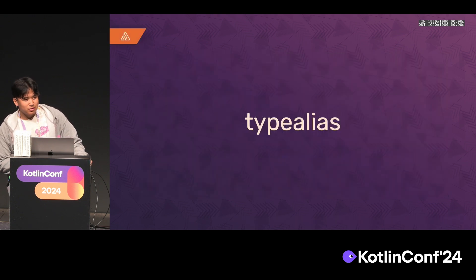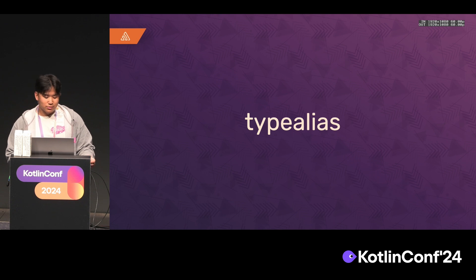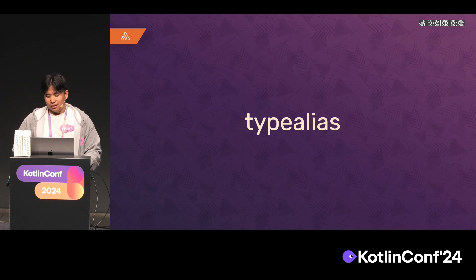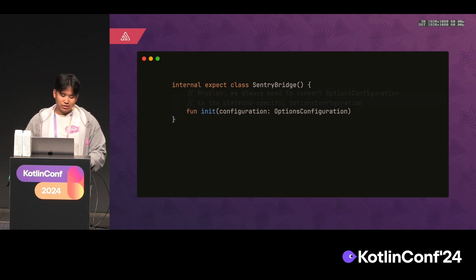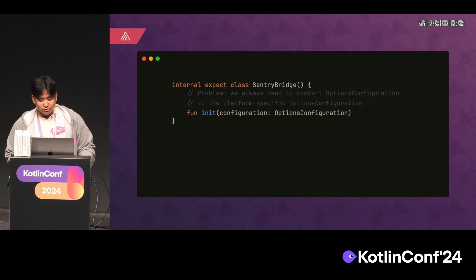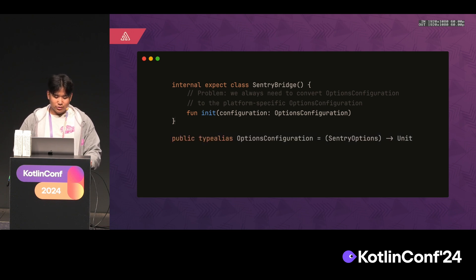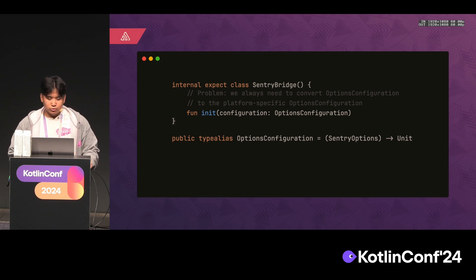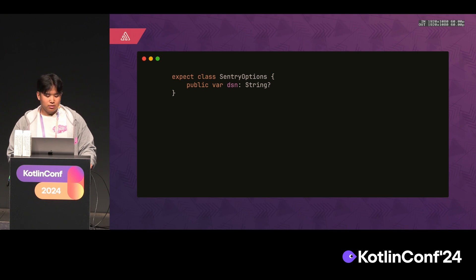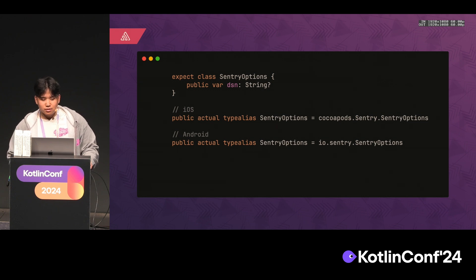There's a way to work around that conversion step: we can directly use platform-specific types using type alias. It's not only good for defining alternate names for existing types — we can also use it in KMP. So for the SentryBridge, instead of always converting, we make SentryOptions an expected class with a DSN property as a nullable string, and then use type alias so that every time we call SentryOptions, we're directly calling the platform-specific options.